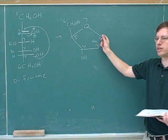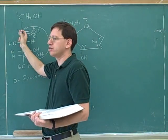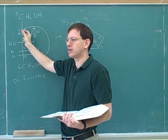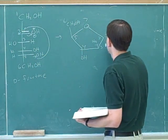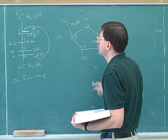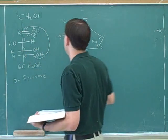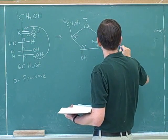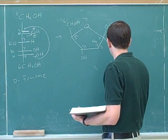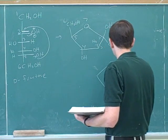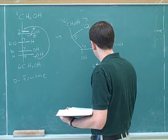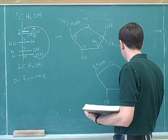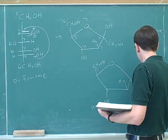Where do the substituents go on number two? Remember that number two is where we're forming a new stereocenter. So on number two, the substituents can go in either direction — this is the new stereocenter we're making. Notice that there are actually two substituents on number two; that's important to realize. We've got the OH and the number one carbon.